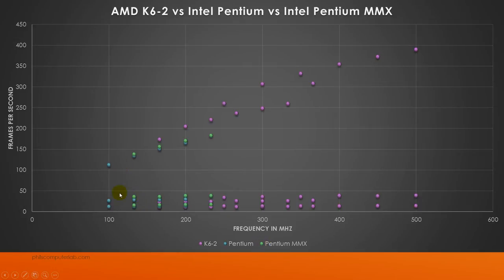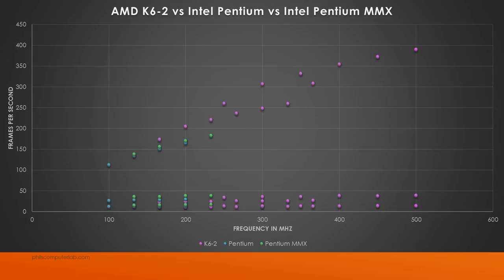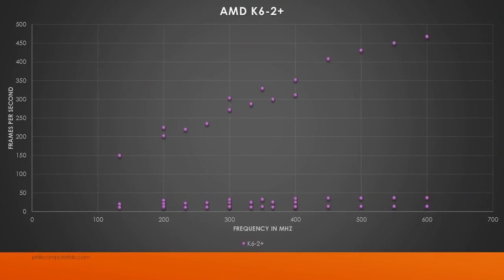With the caches turned off, the Pentium MMX is the fastest, then the Pentium is kind of in the middle, and the K6-2 is actually the slowest chip. What does that mean? If you're trying to hit a slow 386 or a machine as slow as possible, you want the K6-2. If you want a fast 386, go with the Pentium MMX. For something in between, go with the Pentium.